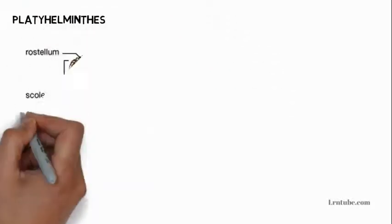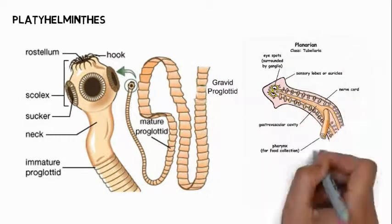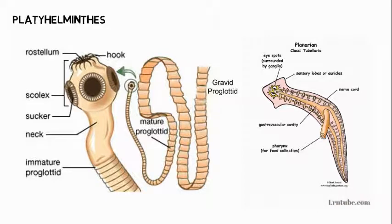Platyhelminthes: They are multicellular flatworms. They are bilaterally symmetrical, meaning the left and right sides can be divided into approximate mirror images of each other. They do not have a body cavity or lumen. Their body is made up of three layers: ectoderm, mesoderm, and endoderm. They are mainly parasites in man and other animals. Most flatworms are hermaphrodites; others reproduce sexually. Examples: tapeworm, liver fluke, blood fluke, and planaria.